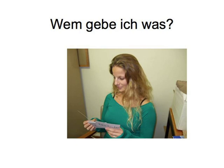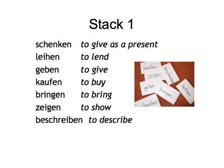Wem gebe ich was? First, write a stack of cards with the following verbs that can have both a direct and indirect object. Put the translation on the back: Schenken — to give as a present; Leihen — to lend; Geben — to give; Kaufen — to buy; Bringen — to bring; Zeigen — to show; Beschreiben — to describe.